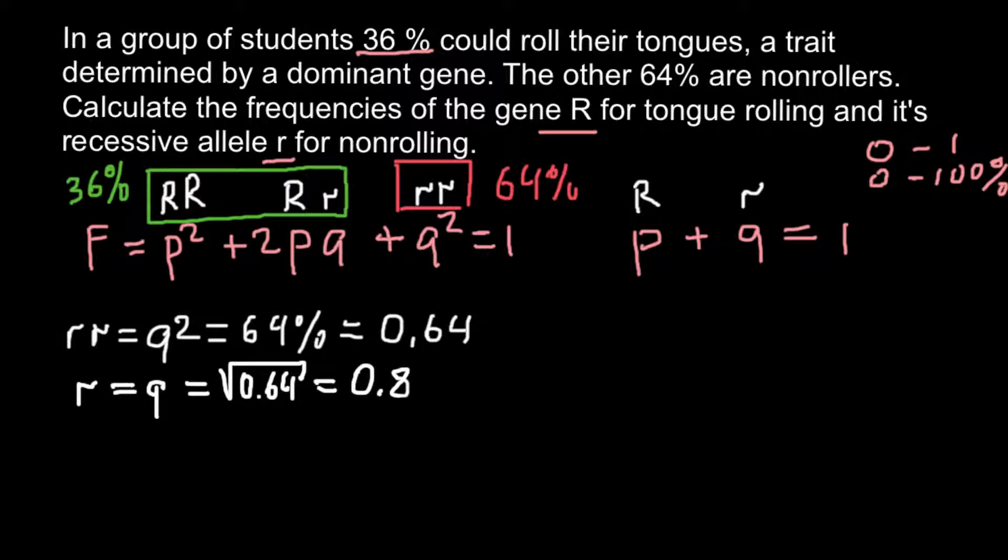The frequency would be 0.8. We can put this frequency here, 0.8. This is going to be the frequency of q or small r allele. As you see, q plus p, or small r plus capital R, or recessive allele plus dominant allele, would equal one.